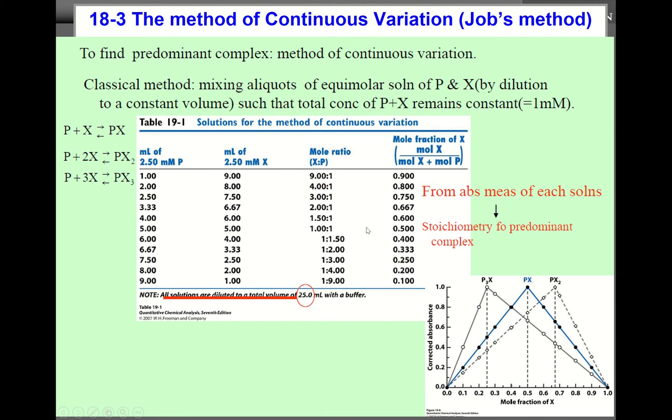Here, the idea, which is the classical method, is mixing aliquots of equimolar solution of P and X by dilution to a constant volume such that total concentration of P plus X remains constant. This is very important. We change the concentration of P and X, but all the time the total concentration of P plus X remains constant. This table shows that example.